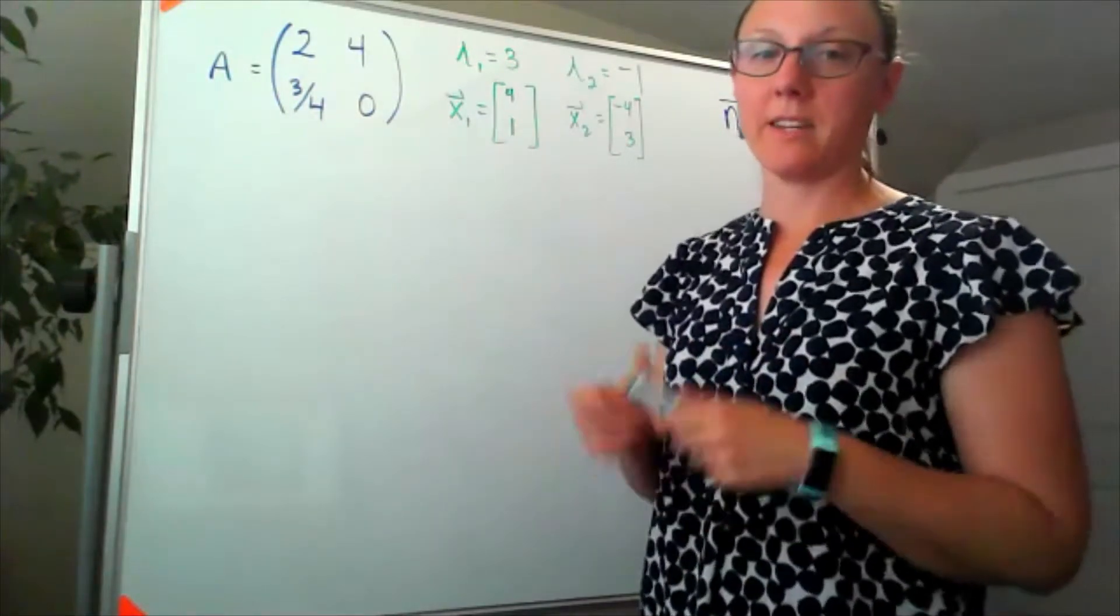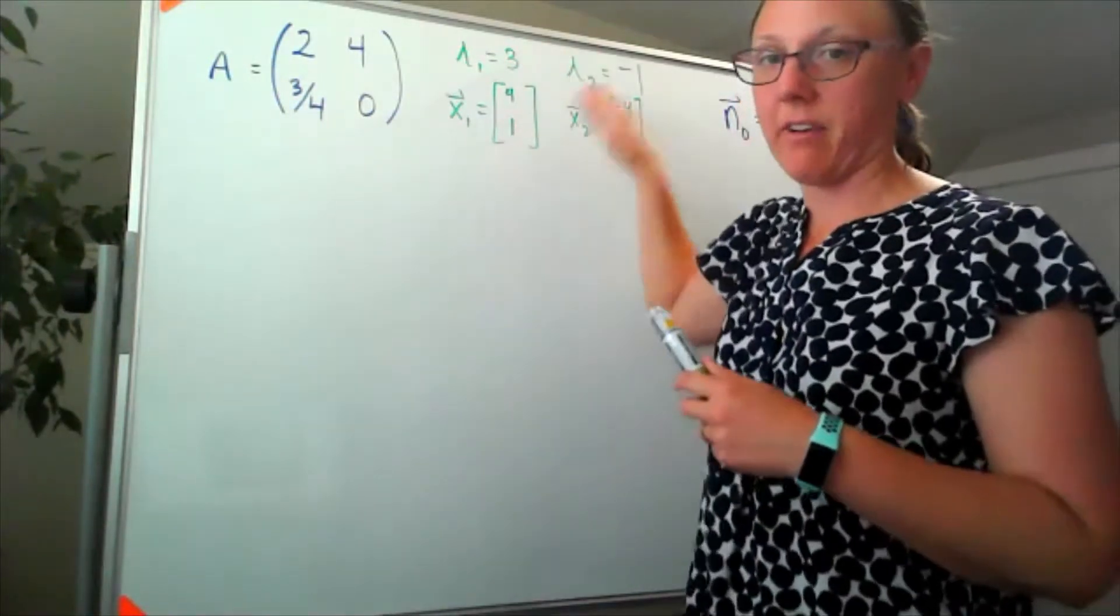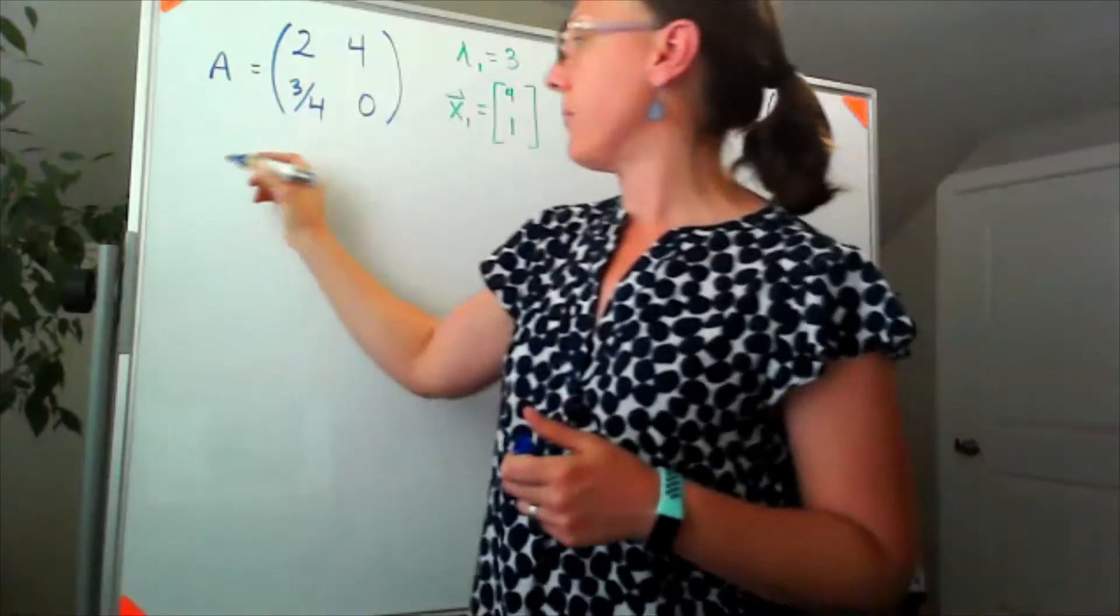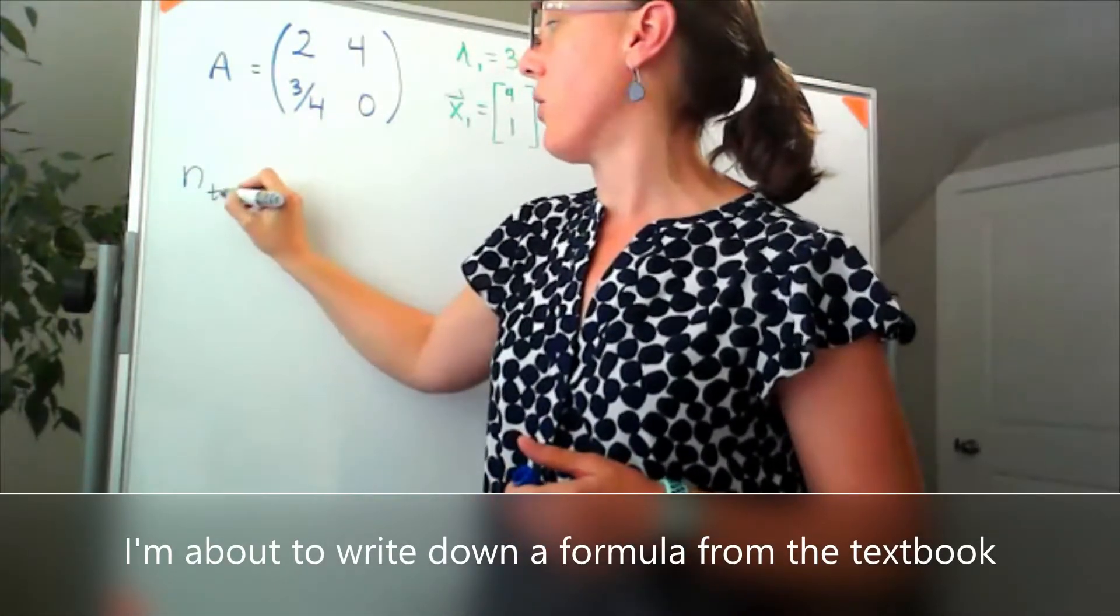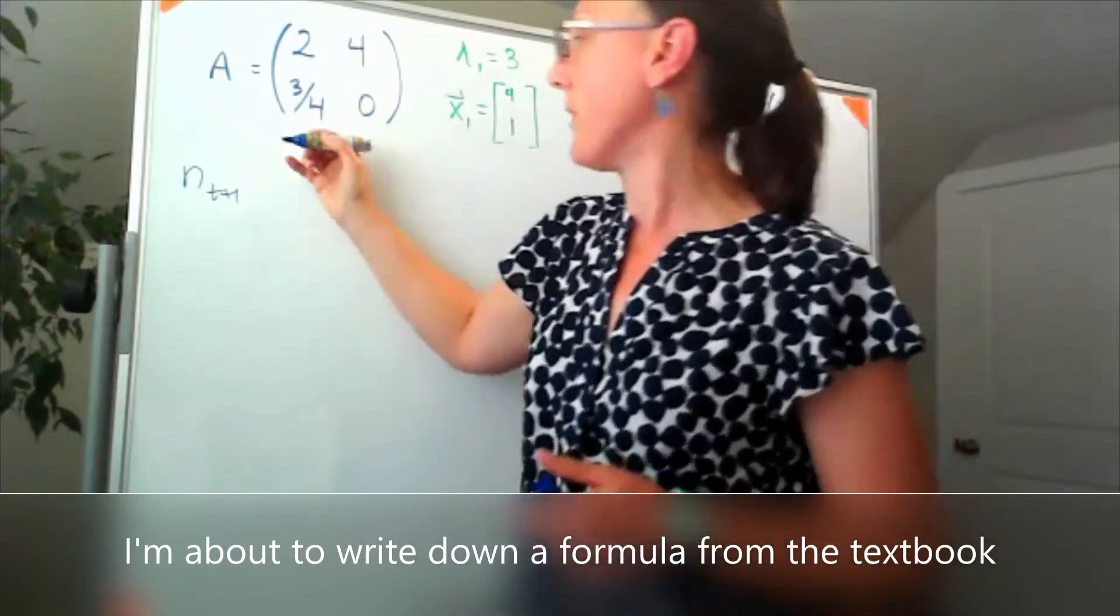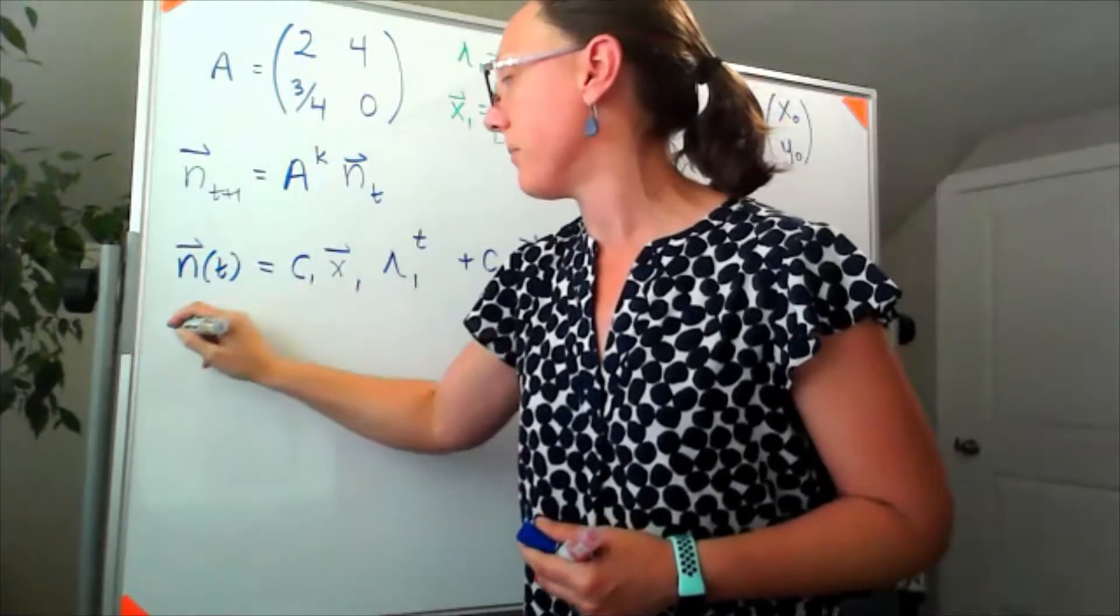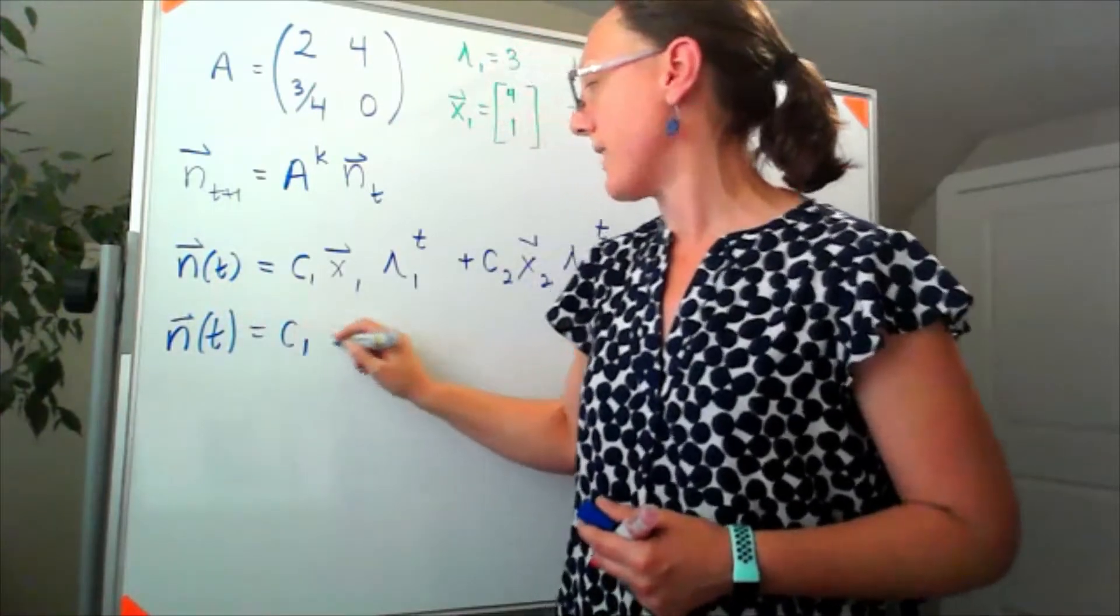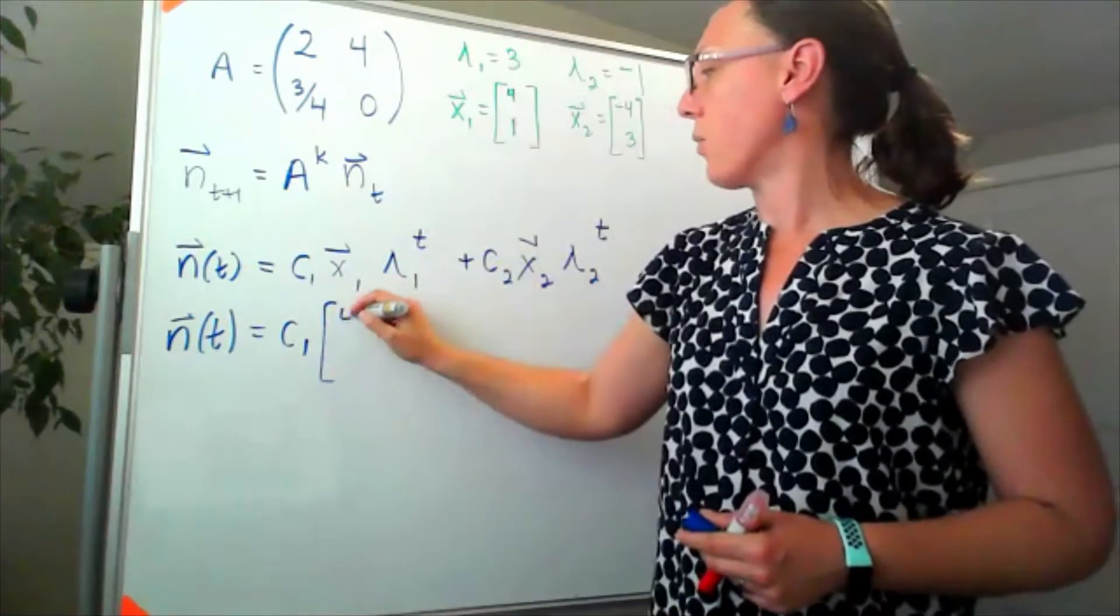If this A represents a Leslie matrix with these eigenvalues and associated eigenvectors, then if I want to look at the long-term behavior of that population, it would look like n_t equals c1, and then our x1 is 4,1 and our lambda 1 was 3, so that'll be 3 to the t plus c2.